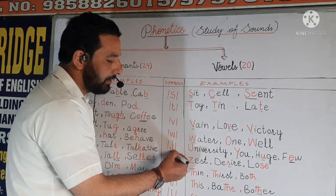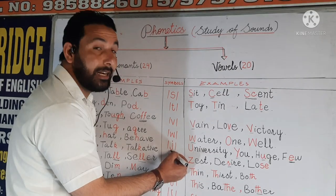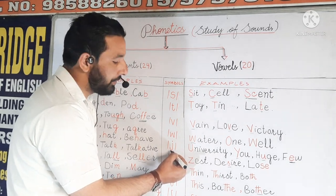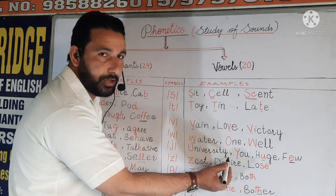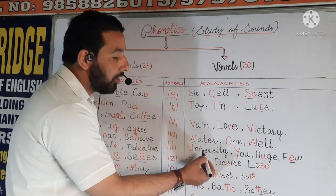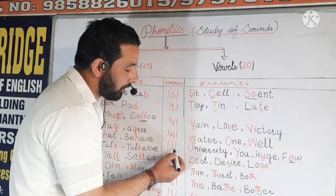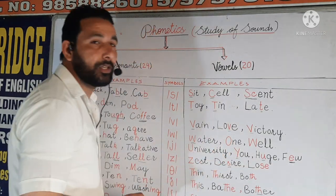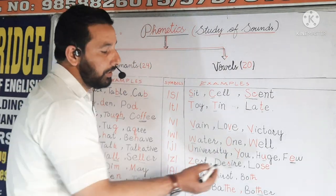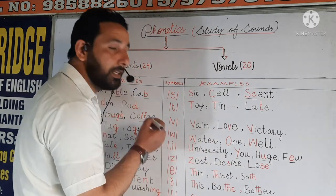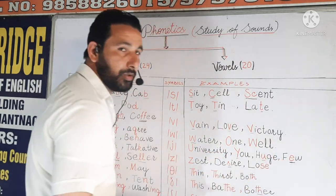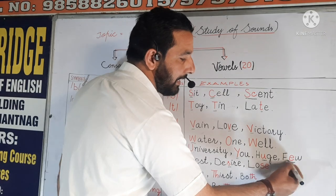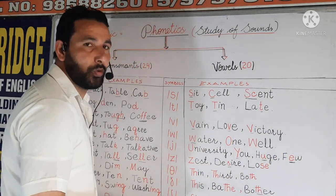Next symbol is Y. It looks like the letter J, but it is the symbol of sound Y. For example, 'university' — if we write the phonetic symbols, we have to start with the sound Y. In the next example, 'u' — we have to start with Y. And next is 'huge' — here we have sound Y.